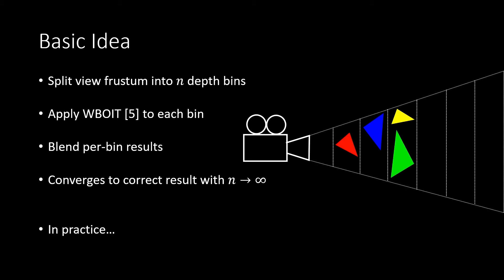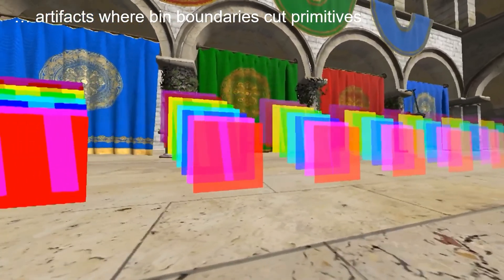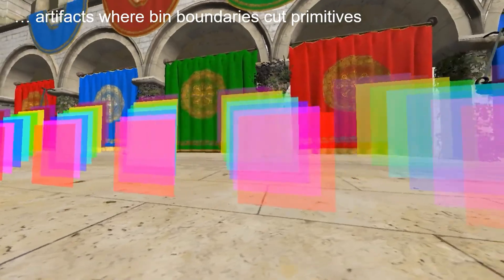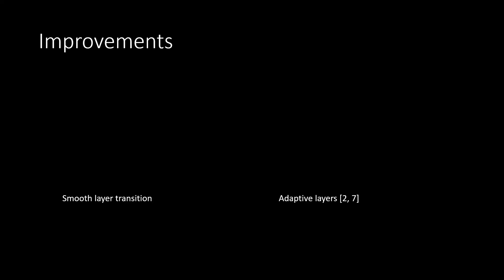Unfortunately, in practice, we only can use a finite number of bins and if we implement this naively, we get these discontinuity artifacts. To mitigate these, we distribute the contributions of each fragment across multiple bins based on a smooth weighting function. In addition to that, we adapt the bins to the depth of the first layer of transparent geometry,